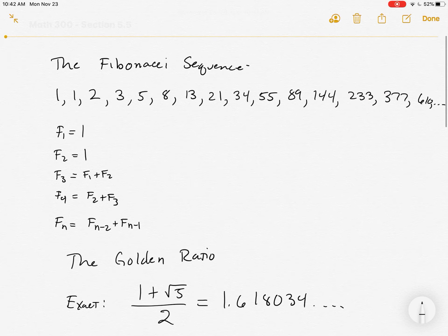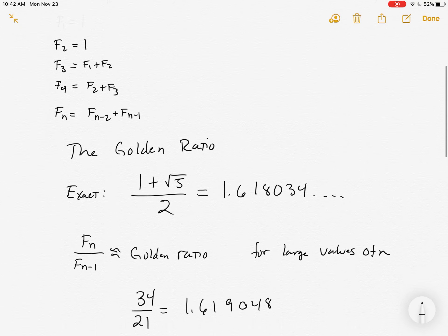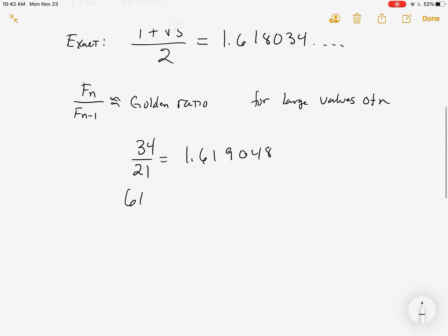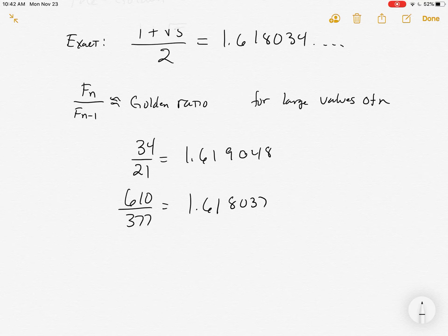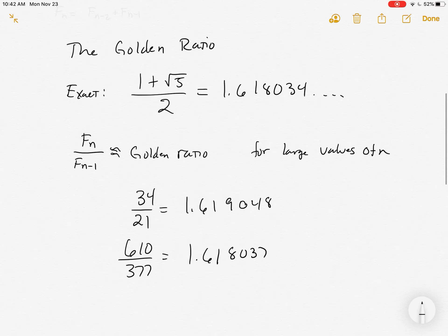As we go out and get larger pairs — 610 divided by 377 — we get almost dead on. Let's see how close: 1.618037. It's a 34 where I got a 37, so very close. As we go out and grab ones farther down, it converges to this golden ratio. Just an interesting consequence.